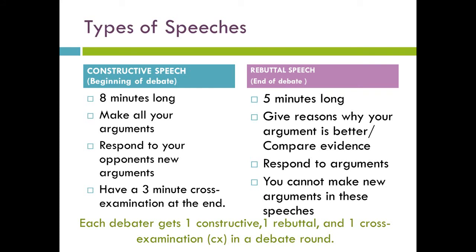Types of speeches — remember there are two. The first type is a constructive, and those occur at the beginning of the debate. They are eight minutes long, and these are the speeches where you make all your arguments and respond to your opponent's new arguments. There's a three-minute cross-examination period at the end. The second type are rebuttals, and those occur at the end of the debate. Those are five minutes long, and these are speeches where you give reasons why your argument is better, compare evidence, and respond to arguments — but you can't make new arguments in rebuttals. Each debater gets one constructive, one rebuttal, and one cross-examination in a debate round.